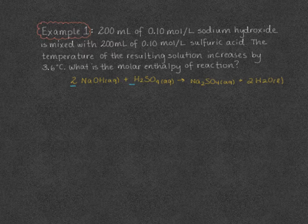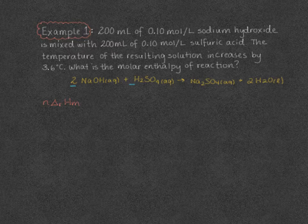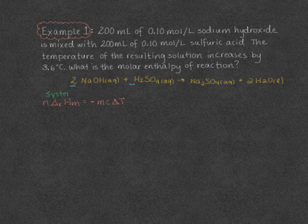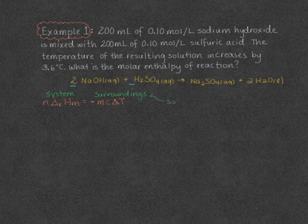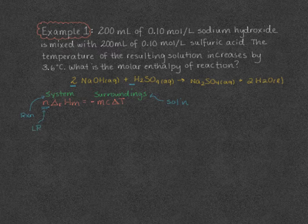The reason we care about limiting and excess reagents in these calculations is our formula N·ΔrHm. The moles of our reactant times the molar enthalpy of reaction equals negative mcΔT of our surroundings. On the left we have our system, on the right our surroundings — in this case, water, meaning the solution itself. The number of moles N is our limiting reagent moles, because the limiting reagent is used up completely and determines how much heat is produced.